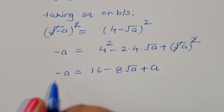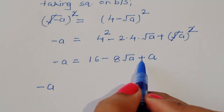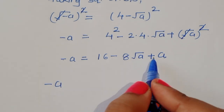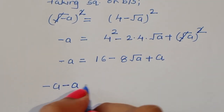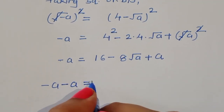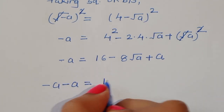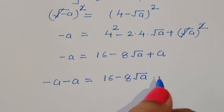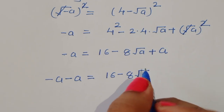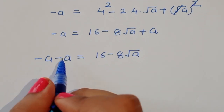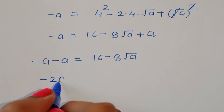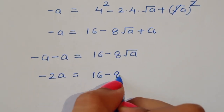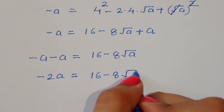Now, −a on the left and +a on the right. When +a comes to the LHS it becomes minus. So −a − a = −2a, giving us: −2a = 16 − 8√a.